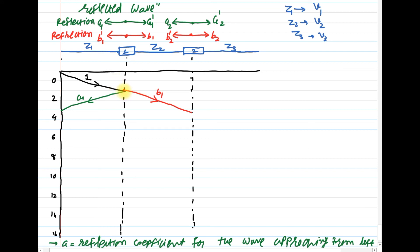The wave reflected back from Junction 1 uses reflection coefficient a1, since a1 is the reflection coefficient for the wave approaching from the left at Junction 1. If refracted and transmitted to the right, we use b1 — the refraction coefficient at the right-hand side of Junction 1.